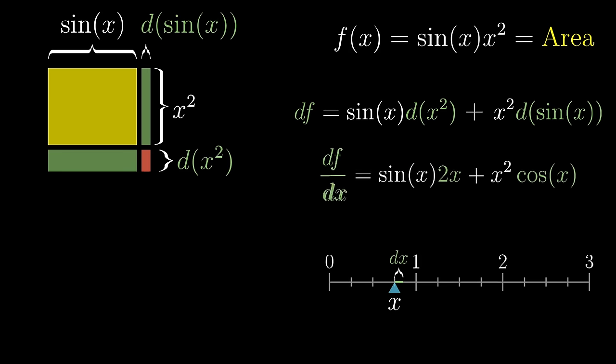As usual, we divide out by that dx to see that the ratio we want, df divided by dx, is sine of x times the derivative of x squared, plus x squared times the derivative of sine.